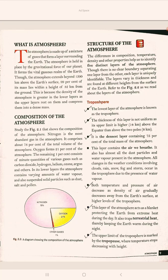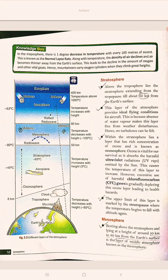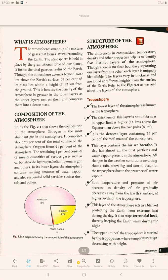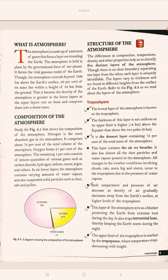Referring to figure 2.2 which shows the different layers of the atmosphere. First layer: troposphere — the lowest layer of the atmosphere. The thickness of this layer is not uniform: its upper limit is 14 km above the equator and 8 km above the two poles. It is the densest layer, containing 75% of the total mass of the atmosphere.